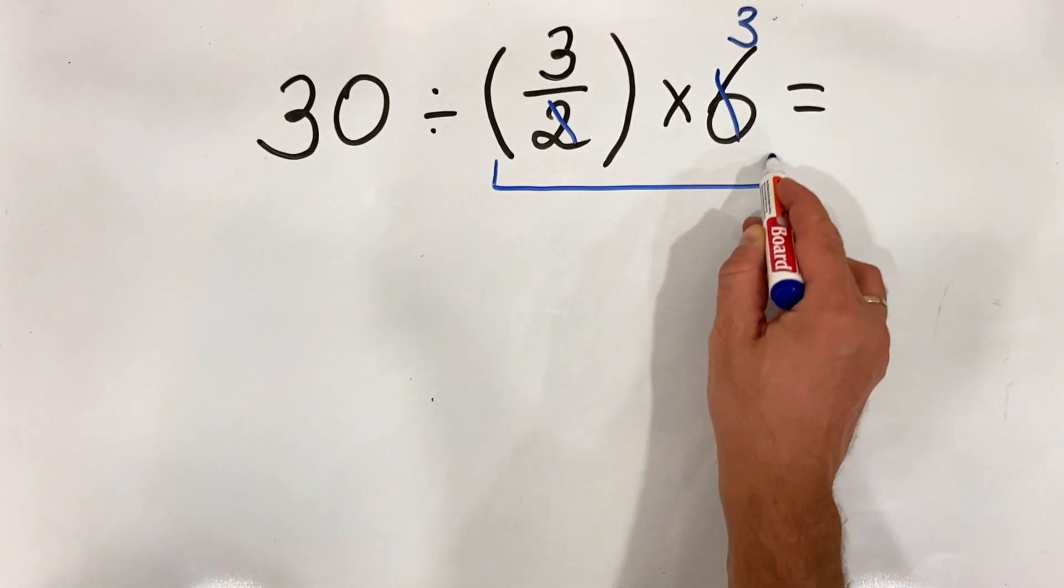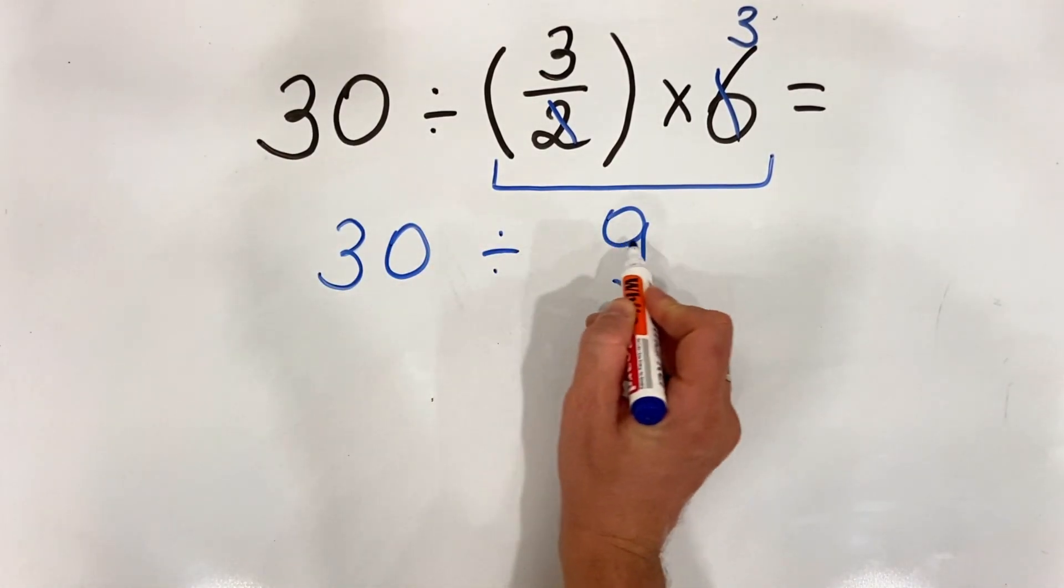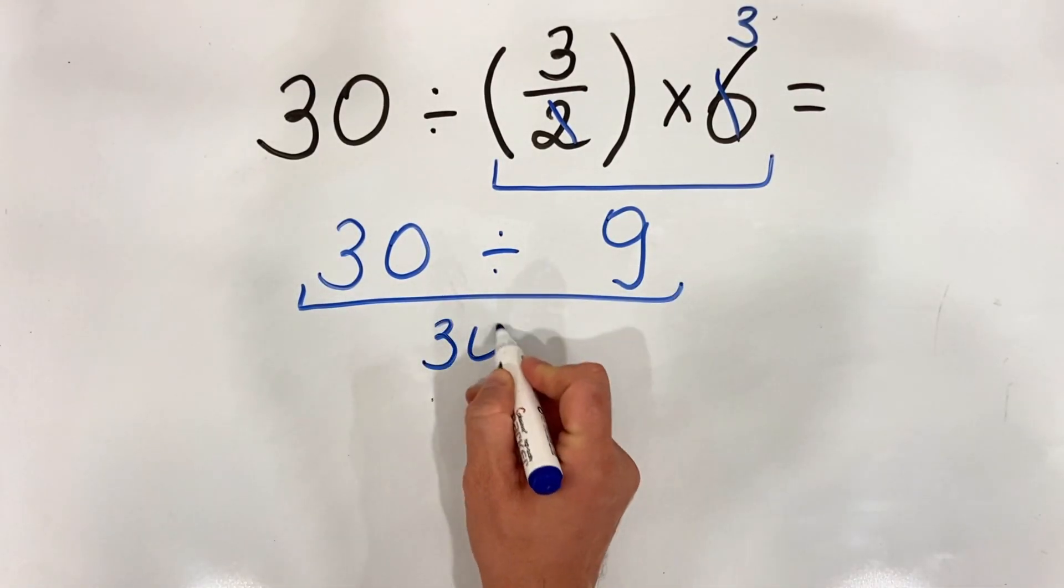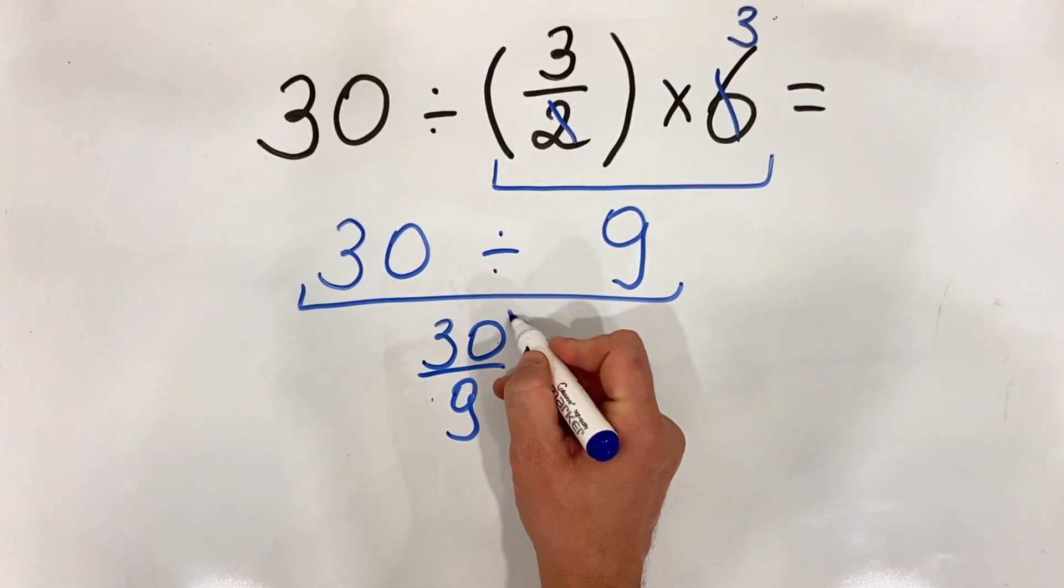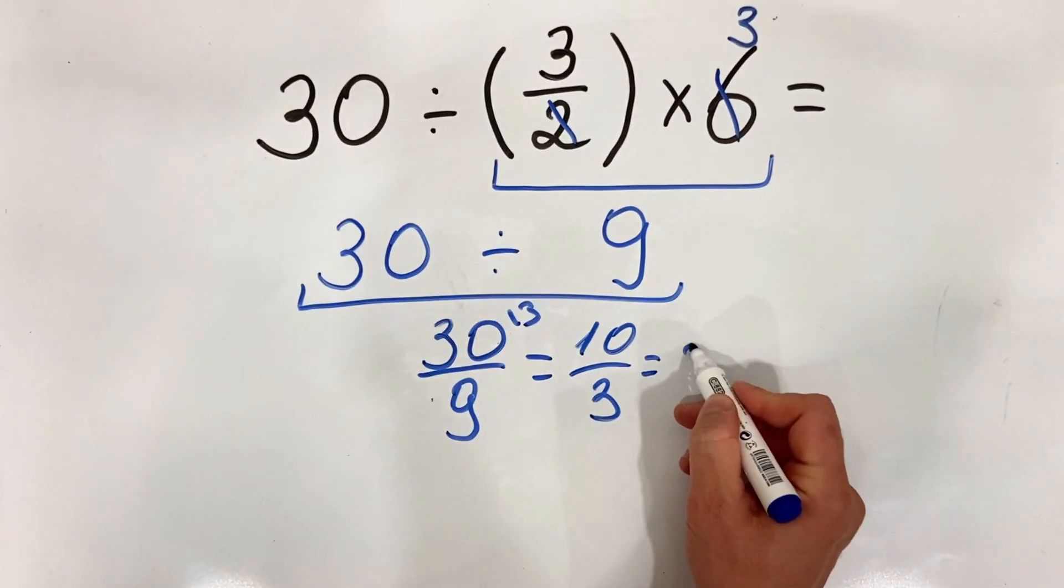Which equals 9. 30 divided by 9 equals 30 over 9. Simplified by 3, this equals 10 thirds, or 3